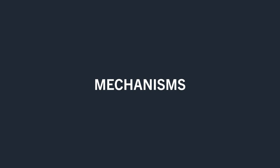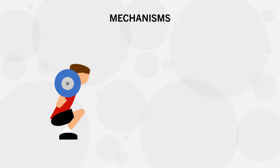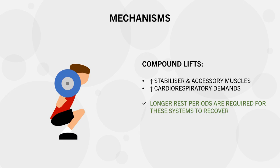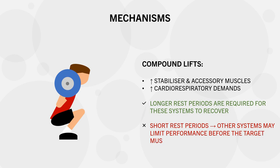This likely comes down to what we mentioned at the beginning of the video — what systems are the limiting factor? When performing compound lifts such as squats, military press, or bent over rows, not only is the target muscle being stressed, but there are many other stabilizer muscles involved and higher demands on the cardiorespiratory system. We want the target muscle to be the limiting factor, not any other systems. So for these lifts, we need rest periods to be long enough for other systems to recover so that they don't limit performance of subsequent sets. If rest periods are too short, then the cardiorespiratory system or other accessory muscles may fatigue and limit performance before the target muscle.